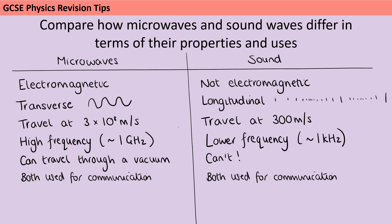Both kinds of wave can be used for communication — microwaves are how you send a text message on your mobile phone and are used for satellite communications generally, whereas sound waves are obviously how we communicate directly when we're speaking.